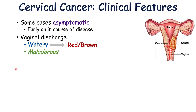A helpful way to remember staging: in stages 2, 3, and 4, the 'B' substage always represents expansion outward — 2b spreads to the sides (parametrium), 3b spreads to the pelvic wall, and 4b involves distant spread.